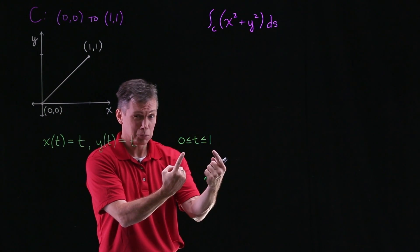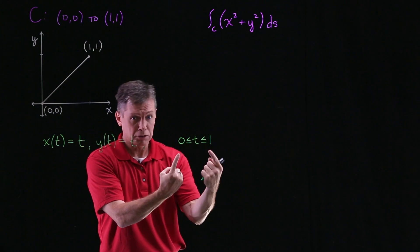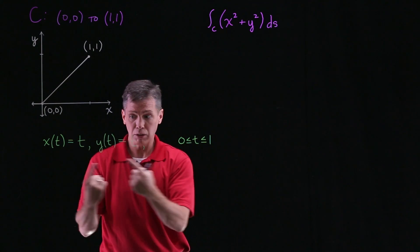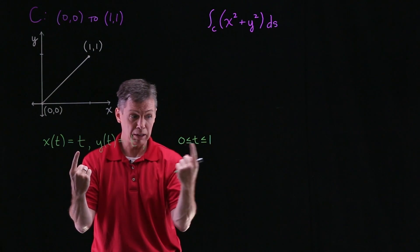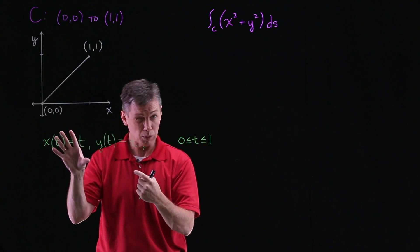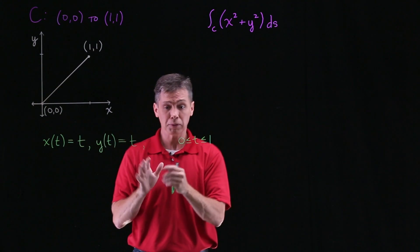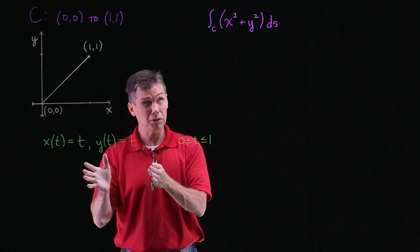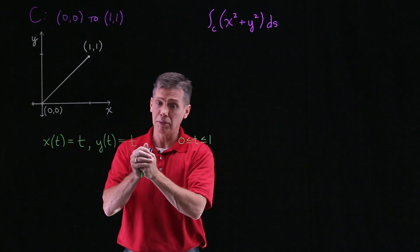And you have your choice on these, make them work for you. But check yourself frequently. Plug in those values of T at the beginning, at the end, and see if your X's and Y's are doing what you want them to do. I'm good. That's my answer to the first part of this problem, parametrizing that path.